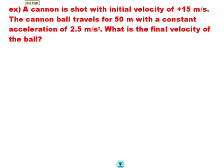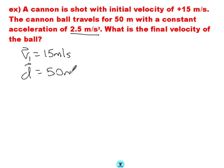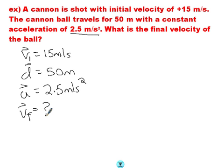Cannon is shot with an initial velocity of 15 meters per second. Travels for about 50 meters with a constant acceleration of 2.5 meters per second squared. What's the final velocity? Hmm, I got initial velocity. I've got displacement. Okay, that's good. Distance. I've got acceleration. Yeah, all of these questions are about accelerated motion, you've probably noticed. And a lot of them will be now. What's my final velocity? Ah, the good old no time equation.